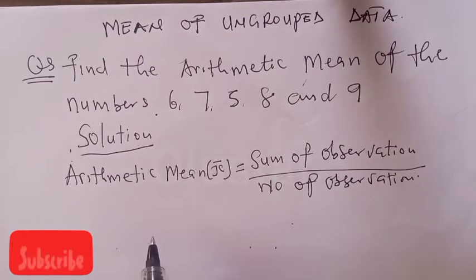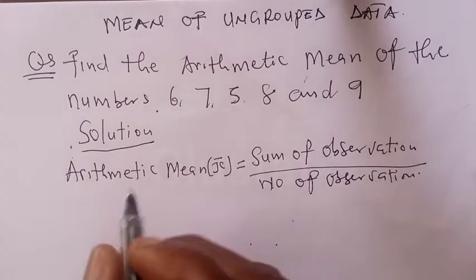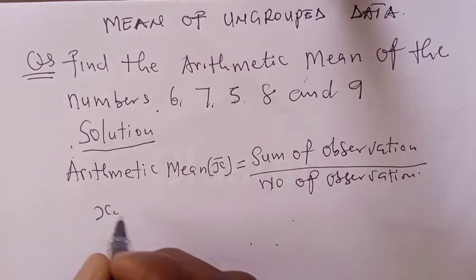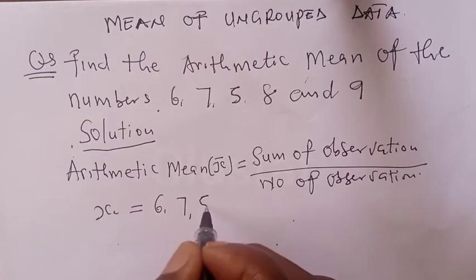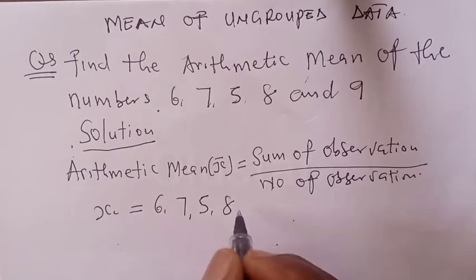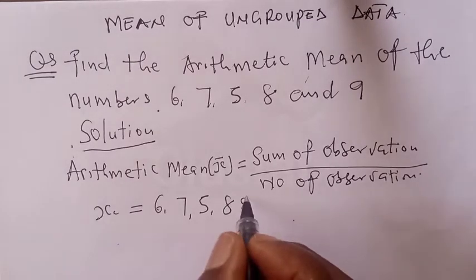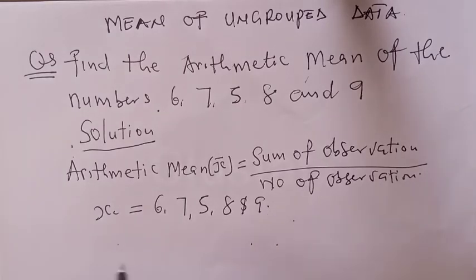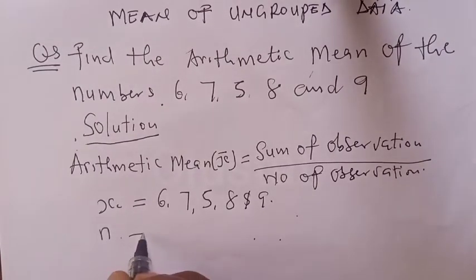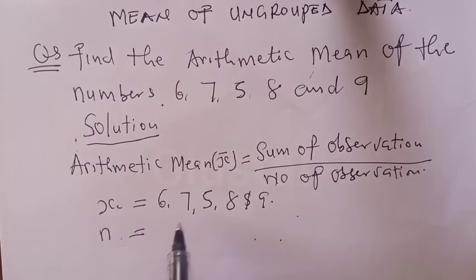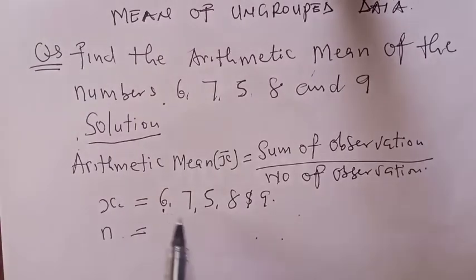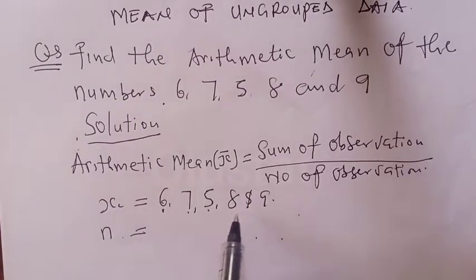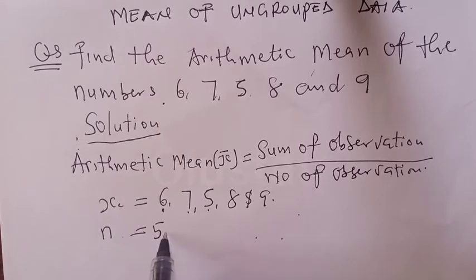From the question, our observed values are xi equal to 6, 7, 5, 8, and 9. Then our n is equal to the number of observations — how many times does the value appear? That is 1, 2, 3, 4, 5. So n equals 5.